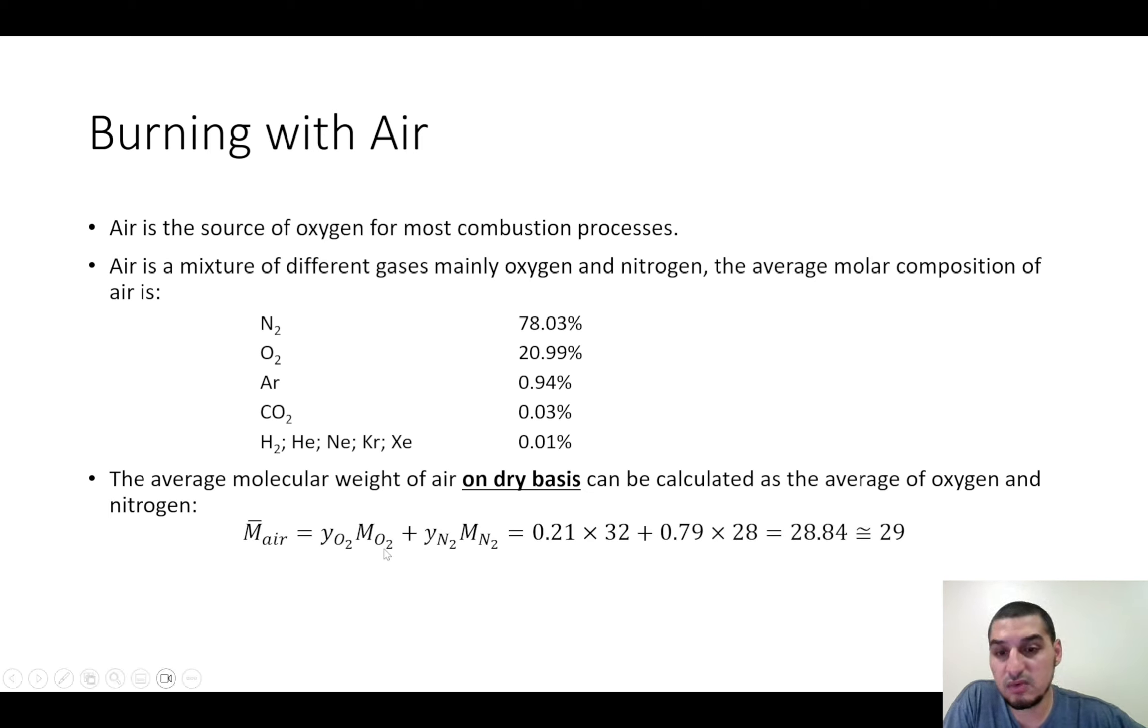That's why when we calculate the average molecular weight of air, it would be around 29, which is the mole fraction times the molecular weight for oxygen and nitrogen. If we have a combustion unit and we don't know how much air is going in, we can know how much oxygen we need, and then we can calculate the accompanying nitrogen to the oxygen. You will have a lot of nitrogen with oxygen, almost four times the oxygen will be nitrogen. This is something we cannot avoid, but we need to keep in mind while doing the combustion calculations.